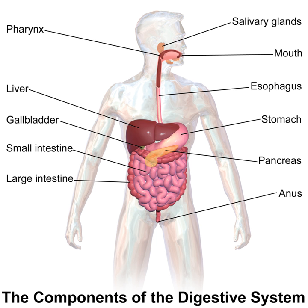In most vertebrates, digestion is a multistage process in the digestive system, starting from ingestion of raw materials. Digestion is separated into four steps: ingestion (placing food into the mouth); mechanical and chemical breakdown (mastication and mixing of the resulting bolus with water, acids, bile, and enzymes to break down complex molecules into simple structures); absorption of nutrients from the digestive system to the circulatory and lymphatic capillaries through osmosis, active transport, and diffusion; and excretion — removal of undigested materials from the digestive tract through defecation.